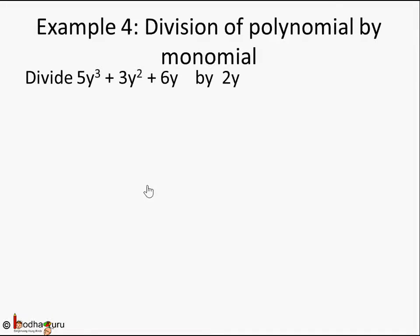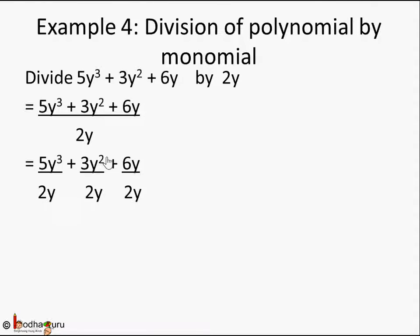Let's take another example. Let's divide 5y³ + 3y² + 6y by 2y. First, write it down with the numerator divided by the denominator. Second step, put the denominator in each of these numerators to break this three-term expression into single terms, so it will become 5y³ by 2y.